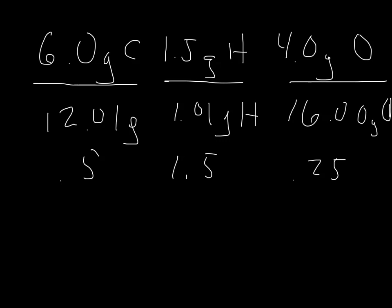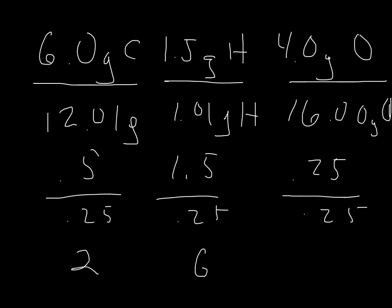We want to simplify that ratio because the subscripts in an empirical formula cannot be fractions — they have to be whole numbers. So we're going to divide each by the smallest of the three, which is 0.25. That gives us 2 for carbon, 6 for hydrogen, and 1 for oxygen. So the whole number ratio of carbon to hydrogen to oxygen is 2 to 6 to 1.